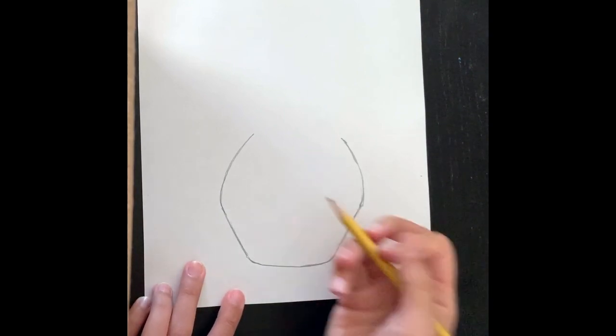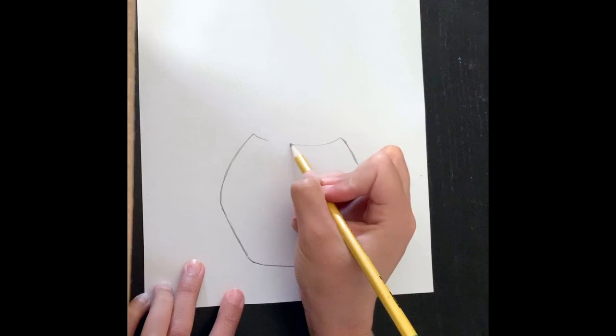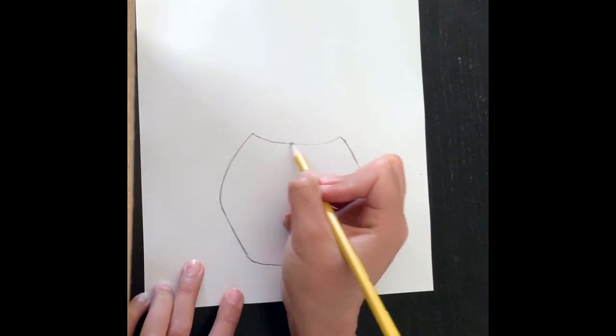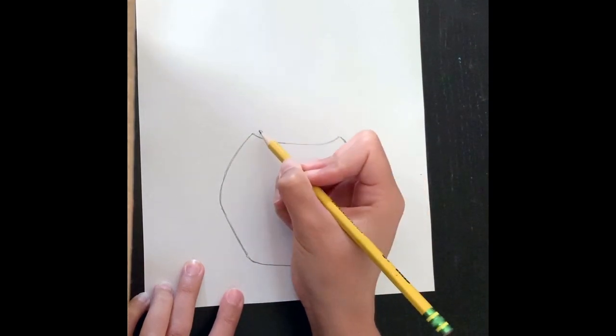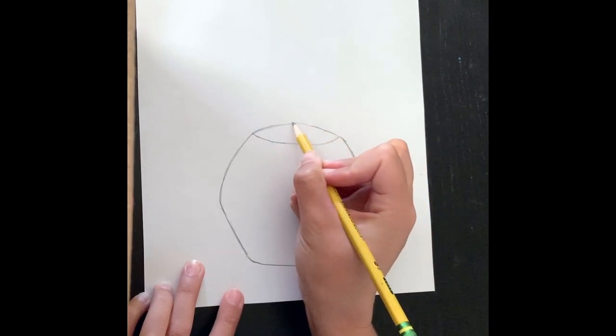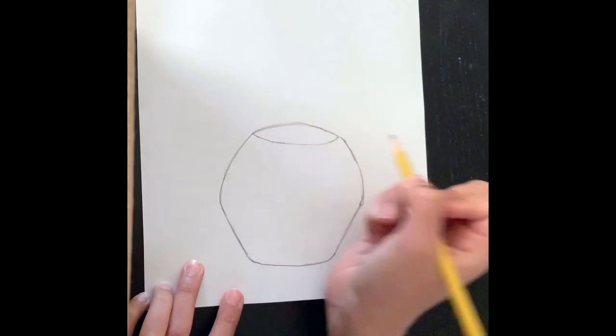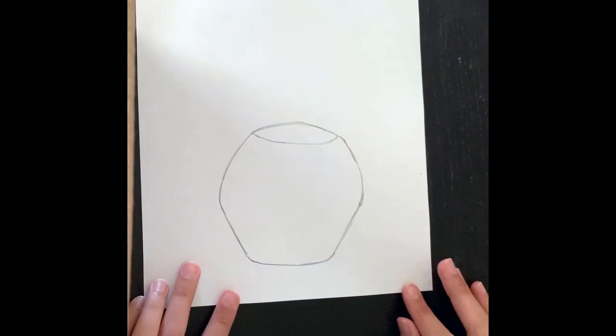And now let's make the top of our vase. Another curved line. And showing that our vase is open. So there's our vase.